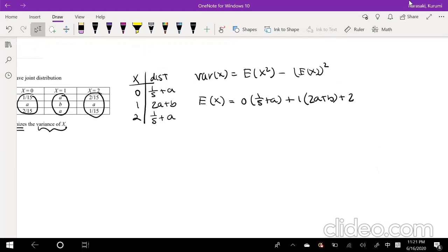Plus 2 times 1 over 5 plus a. Well, this is just equal to 0 and this is just equal to 2a plus b plus 2 over 5 plus 2a. Which could be simplified down to 4a plus b plus 2 over 5. Okay.